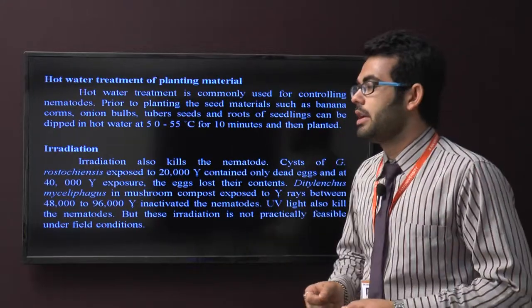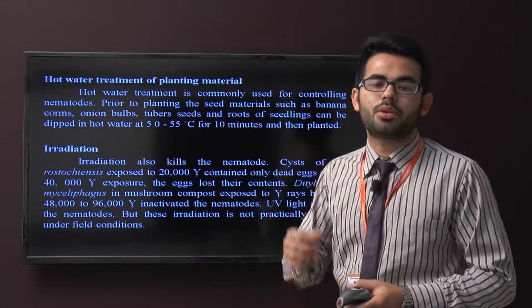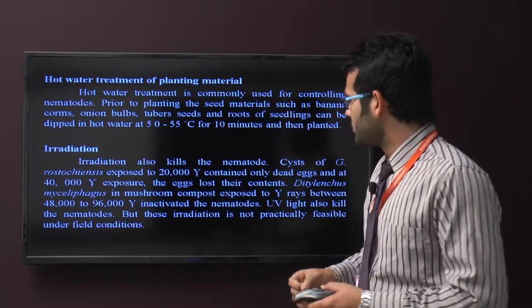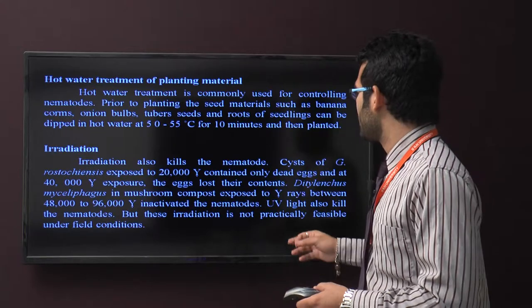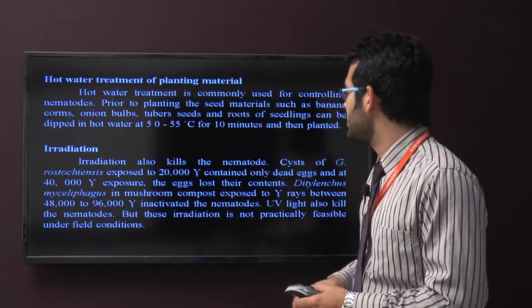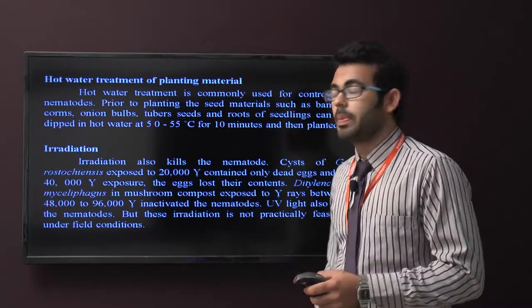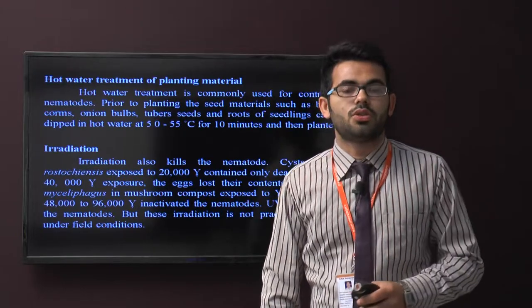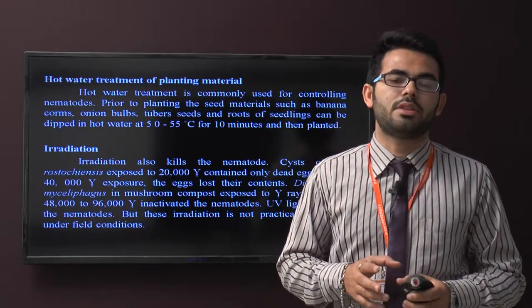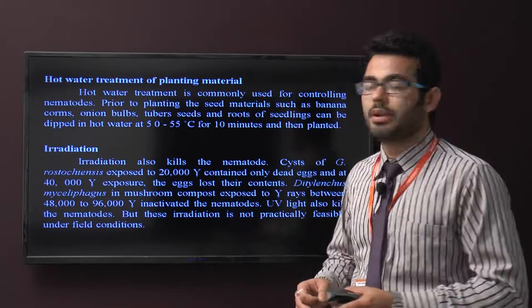Now irradiation. Irradiation is generally used for controlling cyst nematodes. Exposed to 20,000 gamma kills only the dead eggs and 40,000 gamma causes the eggs to lose their content. It enhances Myceliophagus in mushroom. The compost exposed to gamma rays between 48,000 to 96,000 inactivates the nematodes.